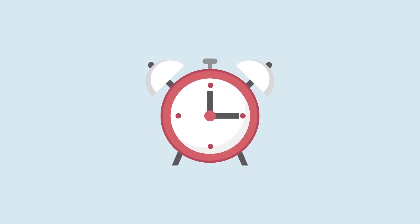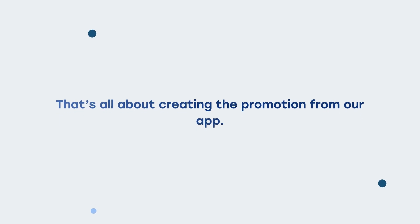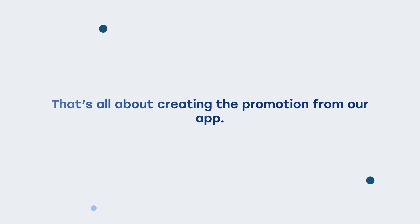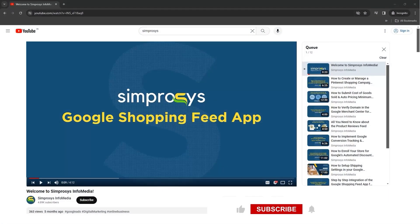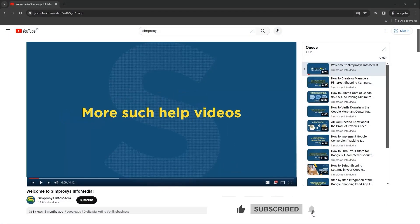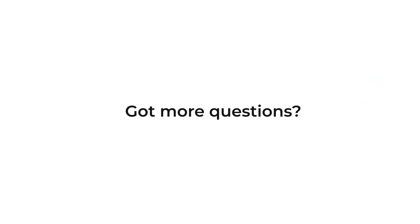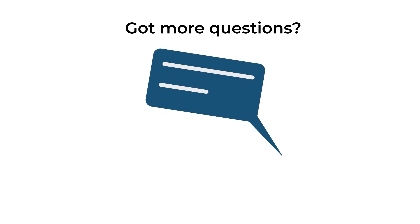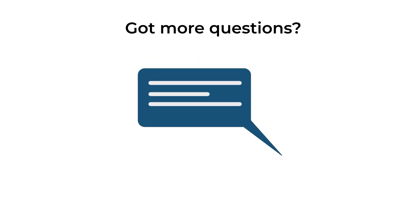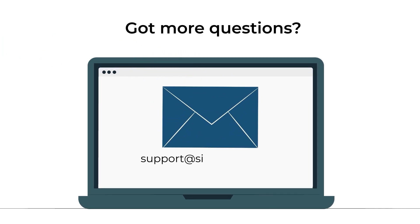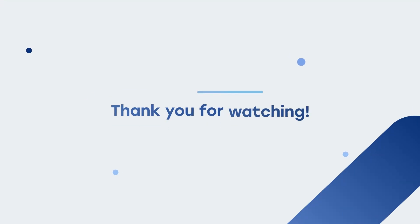Once the promotions are submitted, it takes up to 24 hours for Google to review and approve them. That's all about creating promotions from our app — hope this helps! If this video helped you, don't forget to like, subscribe, and click the bell icon so you never miss out on the latest updates. Got more questions? Drop them in the comments below or send an email to support@symprosis.com. Thank you for watching.